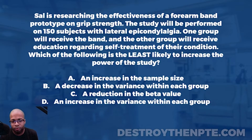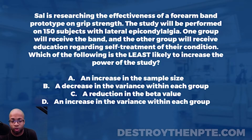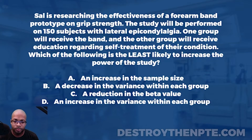For those on the podcast, the answer choices are: A is an increase in the sample size, B is a decrease in the variance within each group, C is a reduction in the beta value, and D is an increase in the variance within each group.